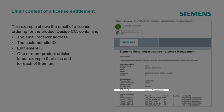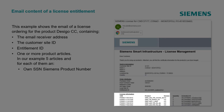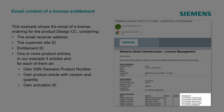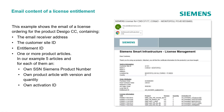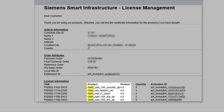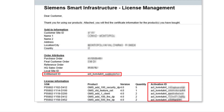Each entitlement can contain one or more products. In our example, the entitlement contains five product articles. Each article has its own Siemens product number, its own product article with version information and quantity, and its own activation identification. Desigo CC is a brand based on the product GMS (Global Management Station), so all product articles start with the product name GMS. The Entitlement ID and the Activation IDs play the main role for the activation of licenses.